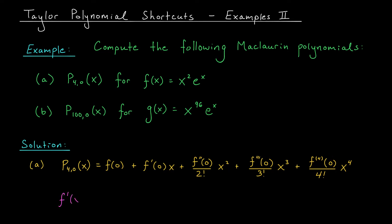To find our first derivative, we're probably going to need the product rule. We're going to have to differentiate our first function, x squared, multiplied by e to the x, and then add x squared times the derivative of e to the x. That gives us two x e to the x plus x squared e to the x. That wasn't so bad, but remember we still have three more derivatives left to compute, and each one of those derivatives is going to require another application of the product rule.